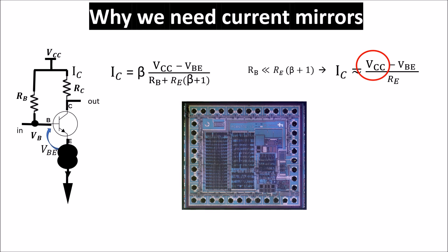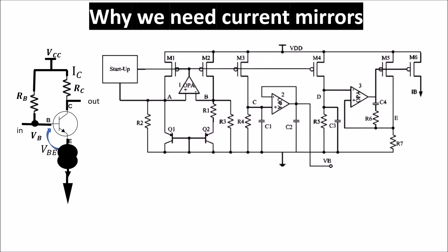If the current source is good so its reference current is stable and independent on temperature and it has a very high output impedance we solve the problem. But good current sources like a bandgap current source are pretty complicated circuits and we cannot put a current source on every transistor we need to bias.